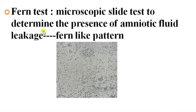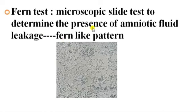The Fern test is a microscopic slide test to determine the presence of amniotic fluid leakage. The specimen is obtained from the external os and vaginal pool, and it is examined under the microscope. A fern-like pattern seen under the microscope indicates the presence of amniotic fluid.